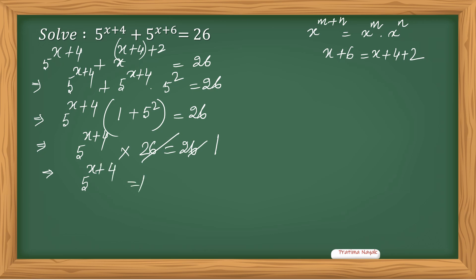You know that any number raised to the power 0 is 1. So I can write 1 as 5 raised to the power 0.